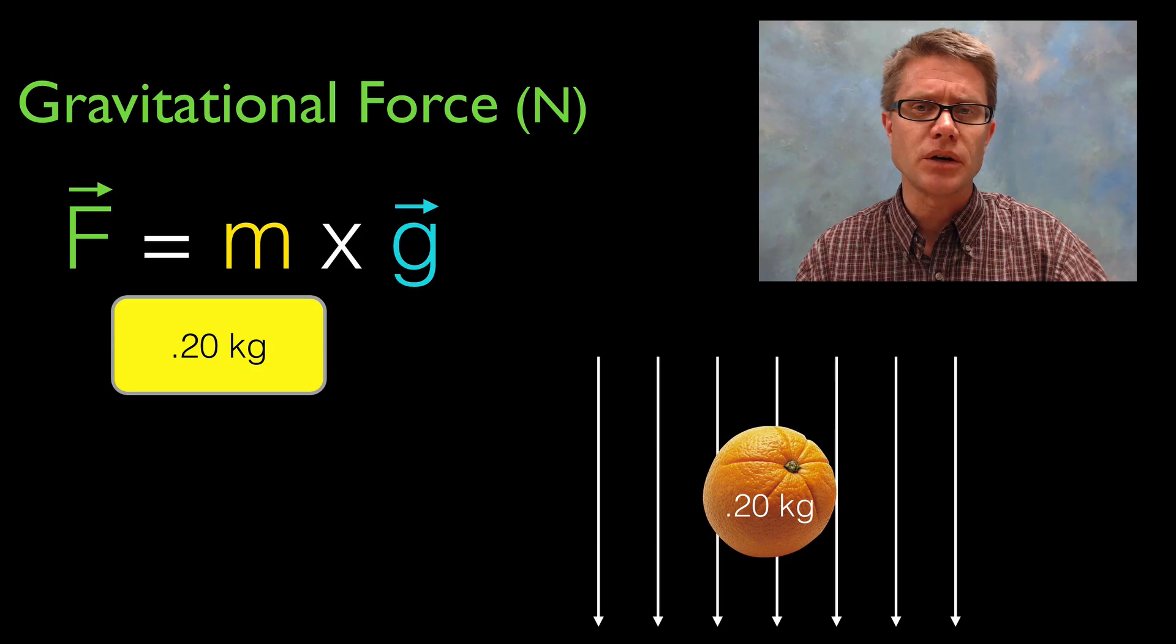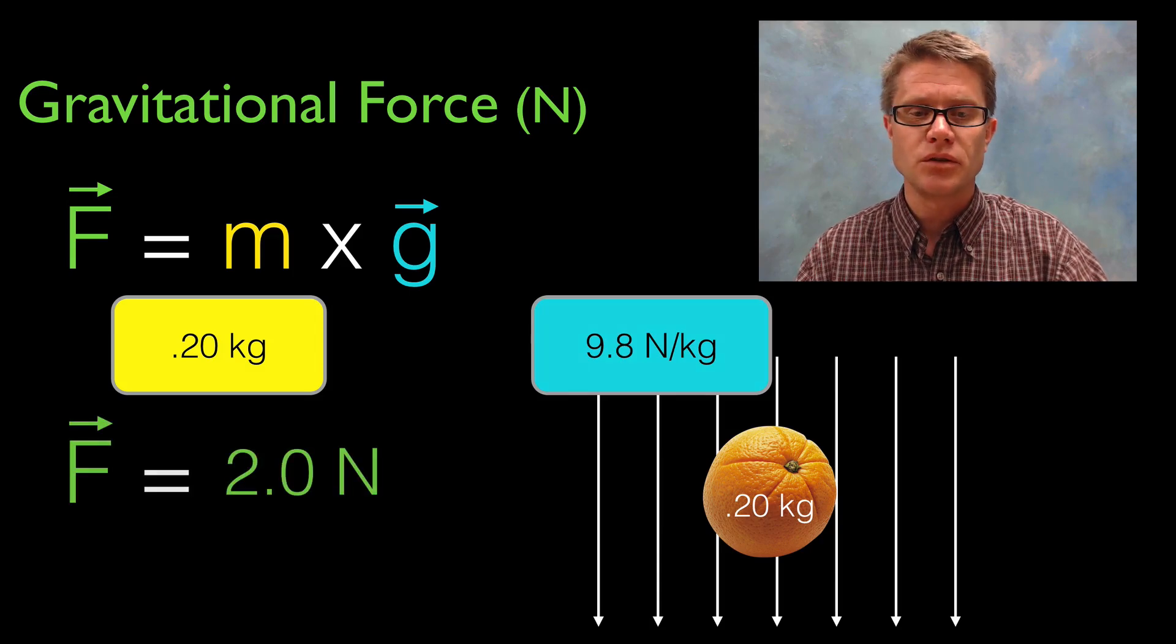And so let's go to that orange. It's got a mass of 0.20 kilograms. What's the gravitational field strength? It's going to be 9.8 newtons per kilogram. And so all we do is multiply those two values together and I get a gravitational force or a force vector of 2.0 newtons. So that's going to be the force acting on that orange.